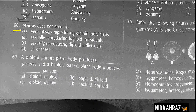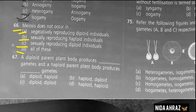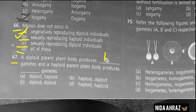Meiosis does not occur in asexually reproducing diploid individuals, sexually reproducing haploid individuals, sexually reproducing diploid individuals, or all of these. Meiosis does not occur in asexually reproducing individuals — there is only mitotic cell division. Sexual reproduction involves both meiosis and mitosis. Option A is the correct choice.